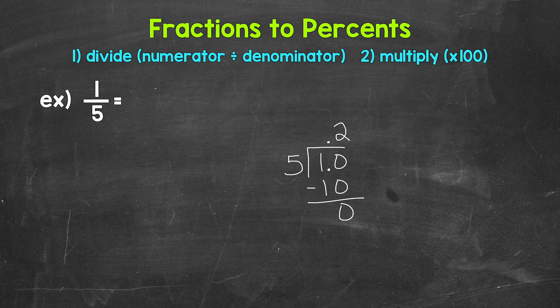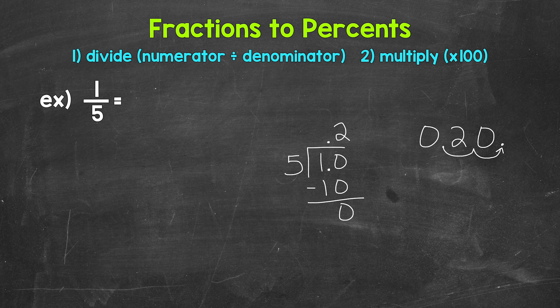Now we need to convert this decimal to a percent by multiplying it by 100. We can do this by moving the decimal twice to the right. So let's rewrite two tenths and move the decimal once, twice to the right, filling the gap with a zero. And we end up with 20 — 20 percent.